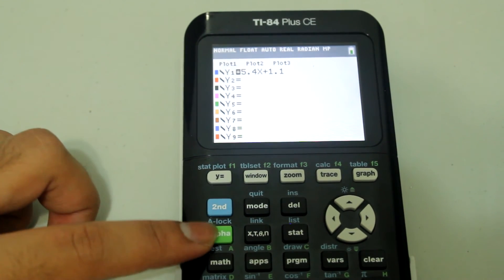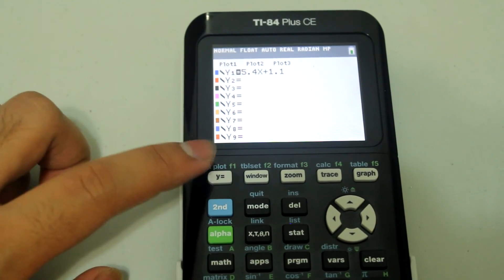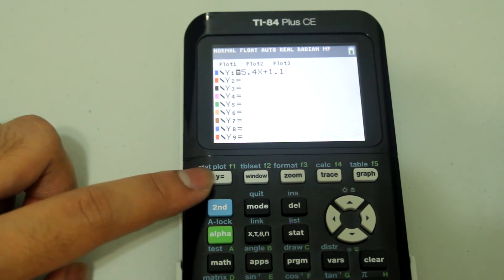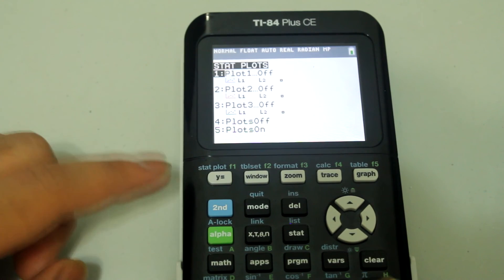Now if we want to graph the scatter plots, what we do is hit second and then Y equals because there's that plot above that. So just, second Y equals.